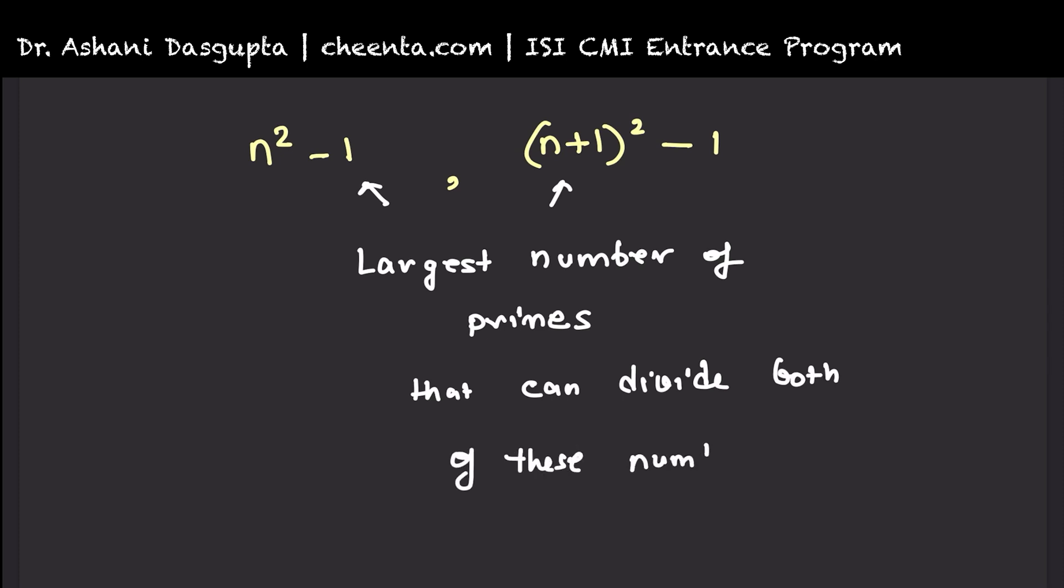By plugging in different positive integer values of n, we get different values of these pair of numbers. Let's see how we can solve this problem.